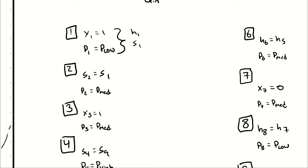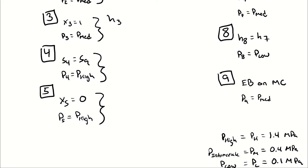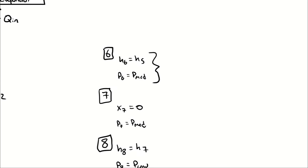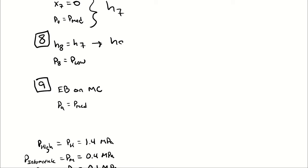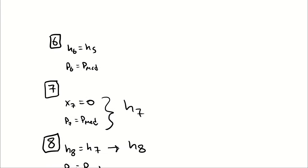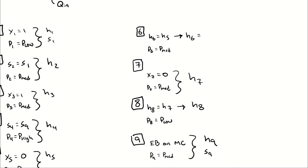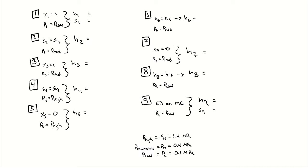At state 1, I want to look up the enthalpy and entropy, because S1 defines state 2, at which I can look up the enthalpy. At state 3, I want the enthalpy. At state 4, I will have the entropy from state 9 and can look up the enthalpy. At state 5, I look up the enthalpy. I don't need to look up anything at state 6 because I'll already have H5. At state 7, I look up the enthalpy, which gives me H8. Enthalpy at state 9 will come from an energy balance. That gives me seven lookups I can do right now.